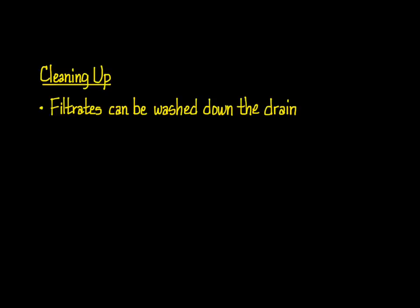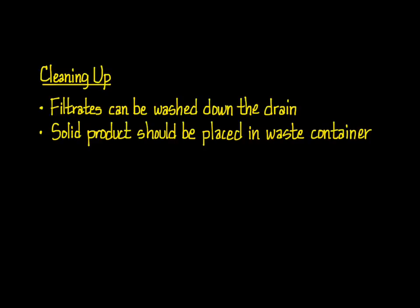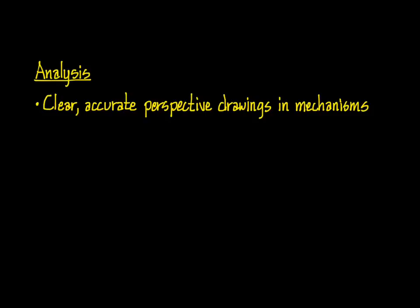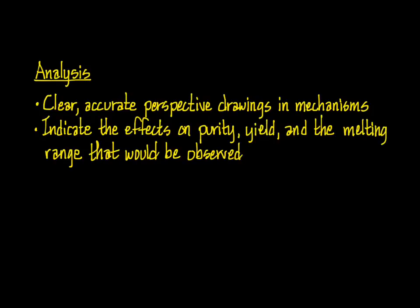When you clean up at the end of the experiment, the filtrates can be washed down the drain, the product should be placed in the appropriate waste container, and you should wash all of your glassware. Finally, a couple of pointers on the analysis. Since the key to this experiment is understanding the stereochemical outcome of the reaction, you need to draw clear, accurate perspective drawings in the mechanisms that show all of the appropriate stereochemistry. You will also encounter a question about the possible effects on the results of certain errors in execution or variations in the procedure. When you answer this, be specific about what would be observed — for example, would the variation increase or decrease the yield? Would it result in an impure product, and if so, what would the impurity be? Would the melting point be affected, and if so, what would you expect to observe?